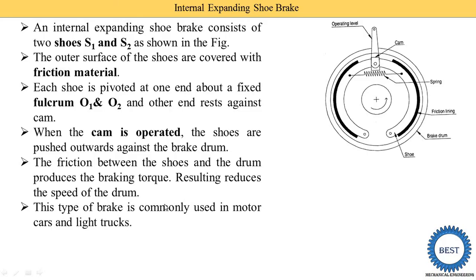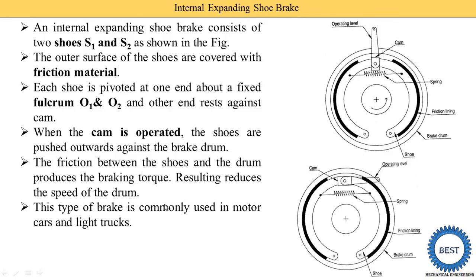This type of brake is commonly used in motor cars and light trucks, and it is also used in bikes. In this diagram, when we operate the operating lever, the cam operates and the shoe operates. When the shoe operates, the friction material comes in contact with the brake drum, some braking torque is produced, and due to this braking torque the speed of the drum is reduced.